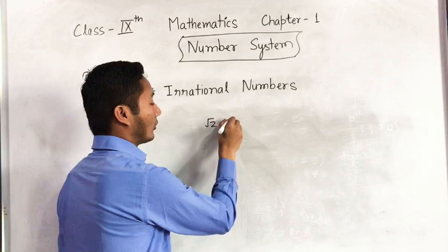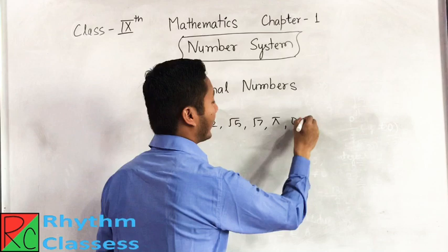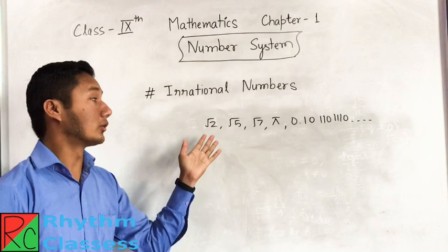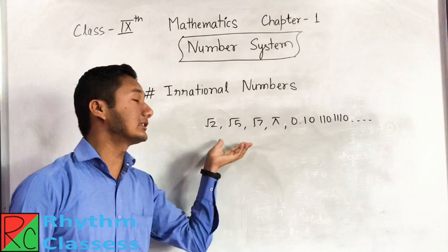Examples of irrational numbers include: √5, √7, π, 0.10110111... and so on. These types of numbers are all called irrational numbers. Why? Because these numbers are not rational — they are irrational. √2, √5, and π are all irrational.